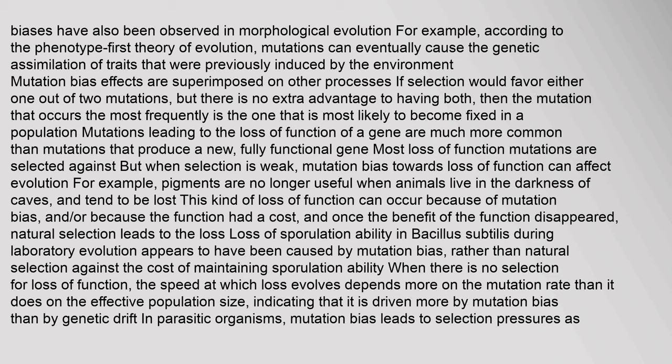According to the phenotype-first theory of evolution, mutations can eventually cause the genetic assimilation of traits that were previously induced by the environment. Mutation bias effects are superimposed on other processes. If selection would favor either one out of two mutations but there is no extra advantage to having both, then the mutation that occurs most frequently is most likely to become fixed. In a population, mutations leading to the loss of function of a gene are much more common than mutations that produce a new, fully functional gene. Most loss-of-function mutations are selected against, but when selection is weak, mutation bias towards loss of function can affect evolution.